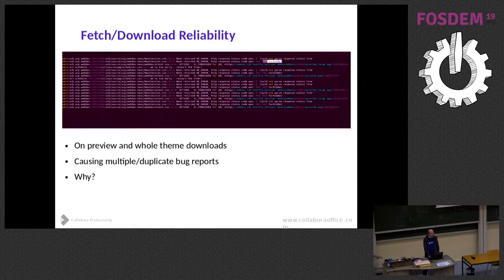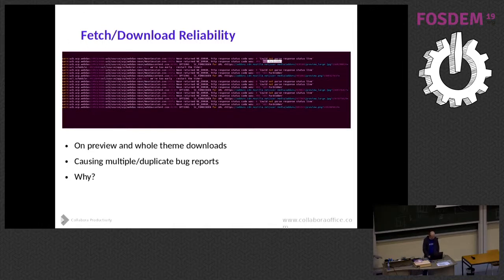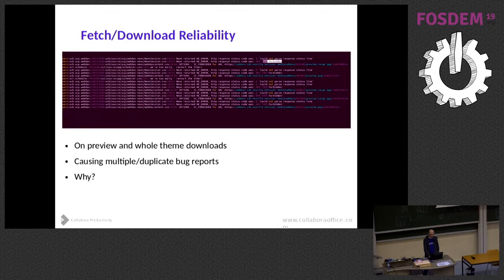The fetch and download procedure was not reliable. On preview and whole theme downloads it was giving errors all the time and failing. For example, there were 403 Forbidden errors, but when you copy and paste that URL into a browser you will see there is no error — it is there. This was causing multiple and duplicate bug reports all the time.